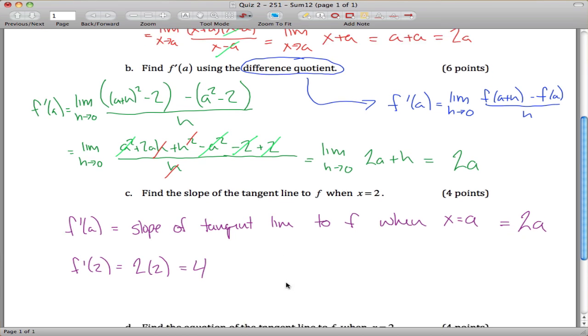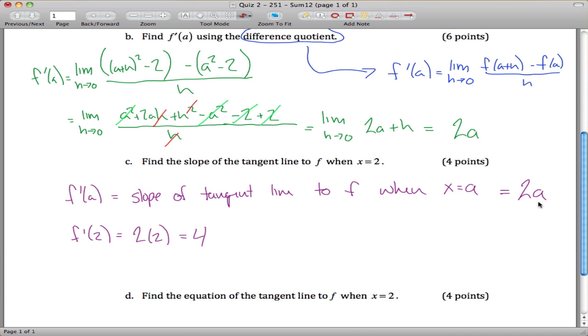So the slope of the tangent line to f when x equals 2 is just take this 2a right here, and change the a into a 2, and you get 4.